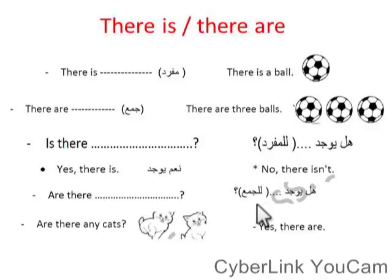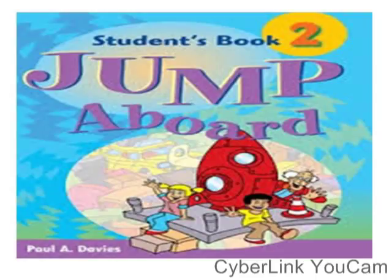ناخد بالنا: there is على الطول نحط وراها a or an على حسب النون اللي جاي بعدها. لو أول حرف منه start with vowel letter بنحط an, لو start with consonant letter بنحط a. ده ببساطة جدا. النهاردة كان شرح Unit 1 for Jump Upward Primary 2.